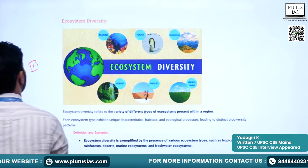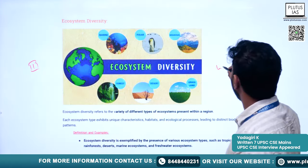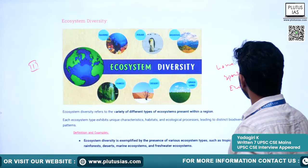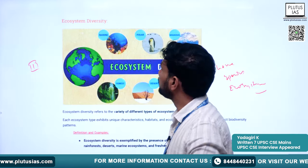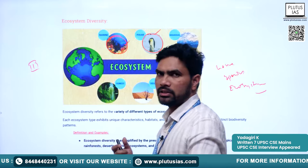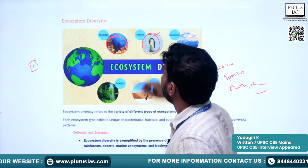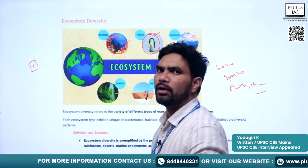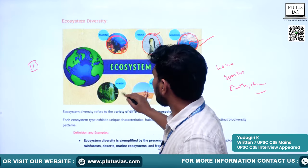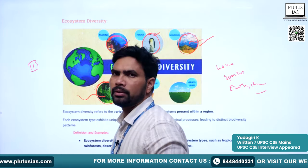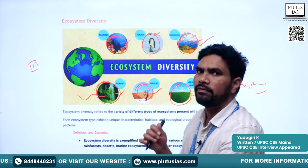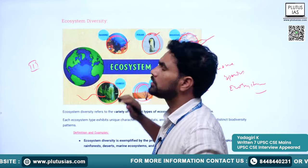The third component of biodiversity is ecosystem diversity — diversity at the ecosystem level. Different types of ecosystems include marine, polar, mountain, forest, desert, and grassland ecosystems. Each is distinct from the others. India itself has many types of ecosystems: deserts, coastal areas, plains, Himalayan mountains, and various forest types.